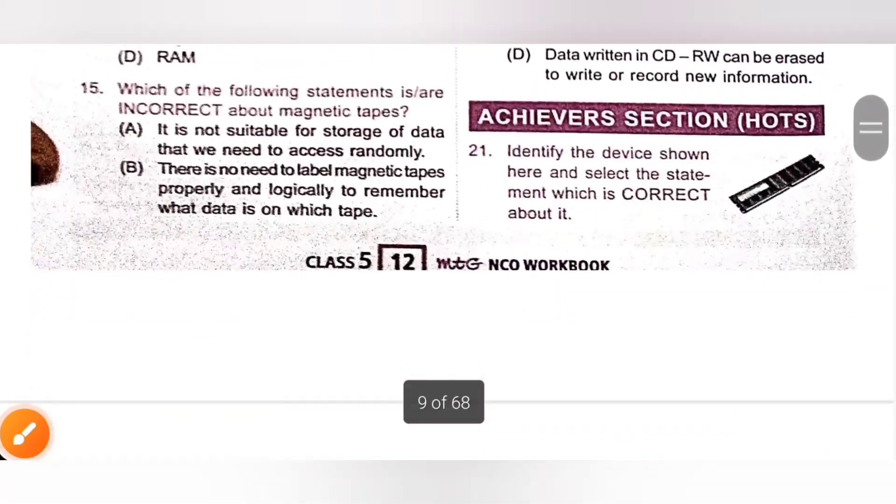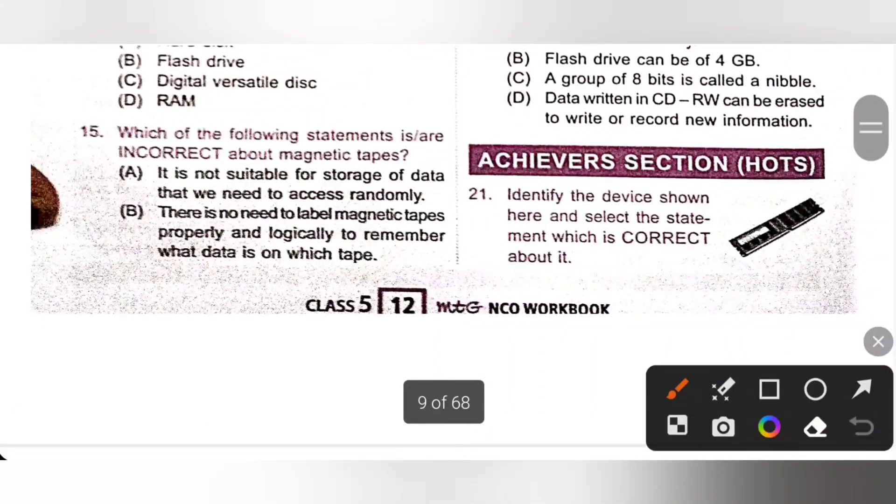15th one, which of the following statements are incorrect about magnetic tapes. Option A, it is not suitable for storage of data that we need to access randomly. It is the correct statement. B, there is no need to label magnetic tapes properly and logically to remember what data is on which tape. It is incorrect.